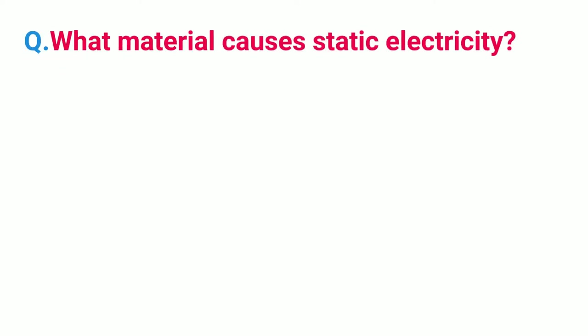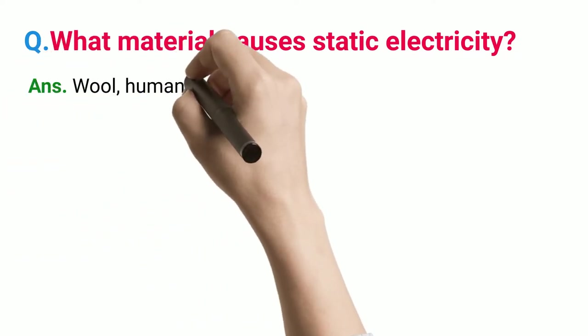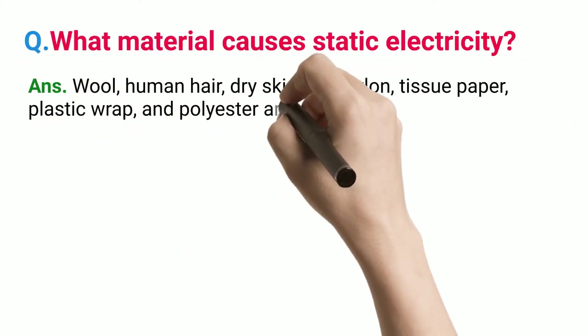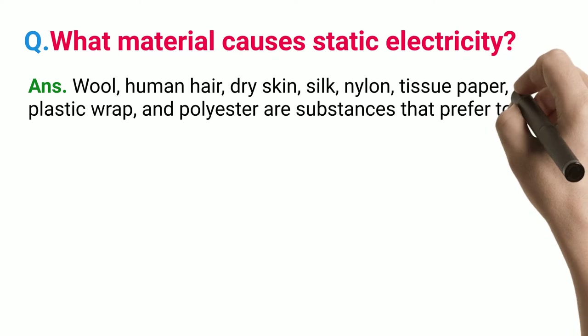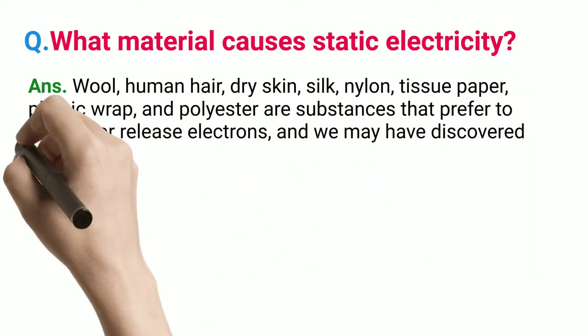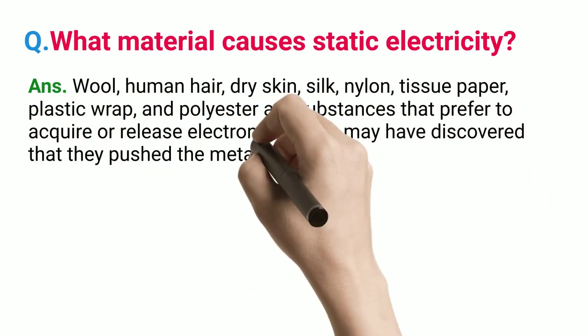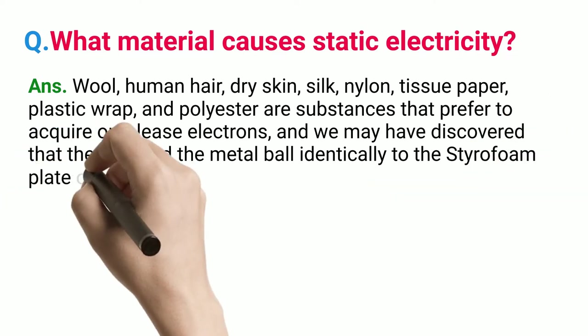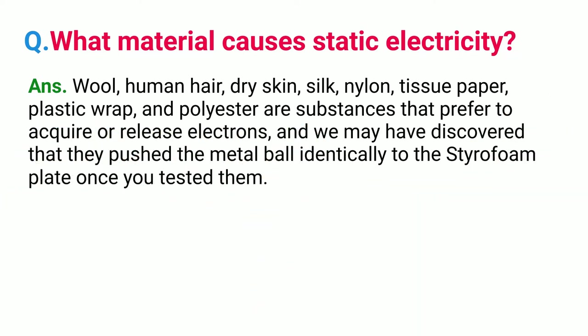What material causes static electricity? Wool, human hair, dry skin, silk, nylon, tissue paper, plastic wrap, and polyester are substances that prefer to acquire or release electrons, and we may discover that they push a metal ball similarly to a styrofoam plate when tested.